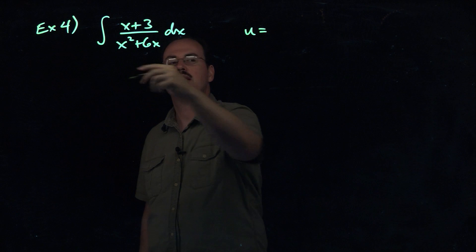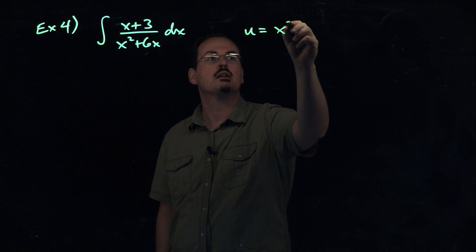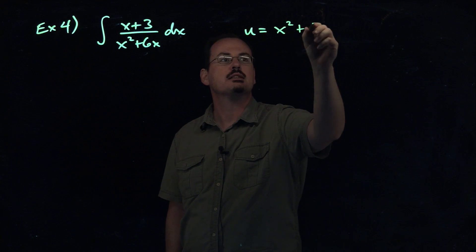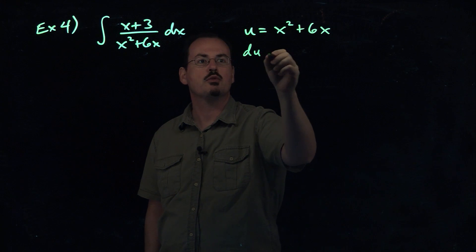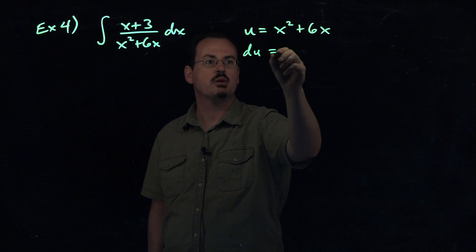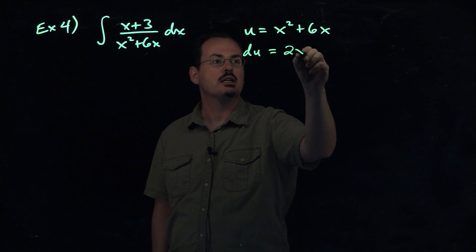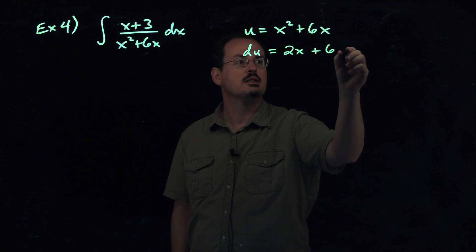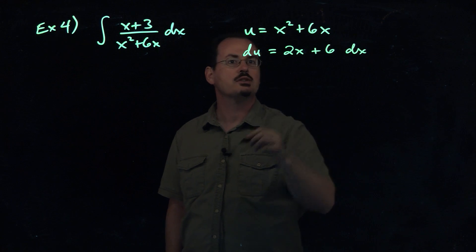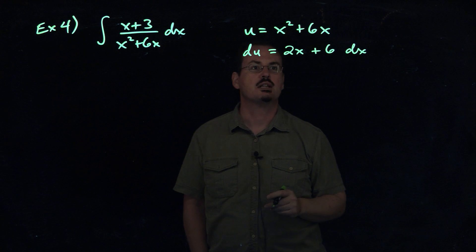So if we do that here, if we say that u is equal to x squared plus 6x, and then we go ahead and find the derivative of that. Remember, it's du/dx, and we can take the derivative, and then we multiply both sides by dx. So doing both of those things at the same time, we'll get this.